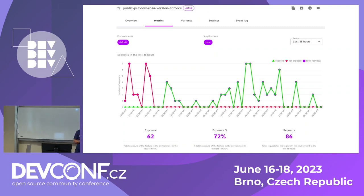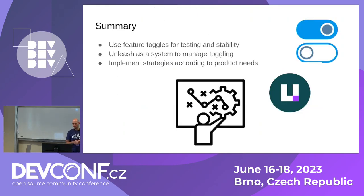To summarize: using feature toggles is a great way to test your product and keep it stable as a service. Unleash is a great system to manage your feature toggles, and you can implement your own strategies according to your product and business needs. I'll take any questions now.